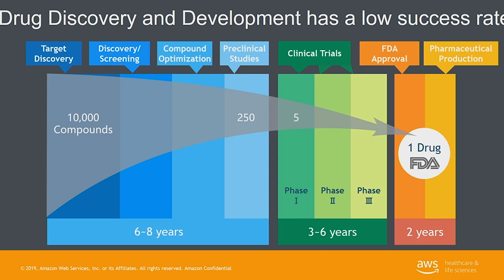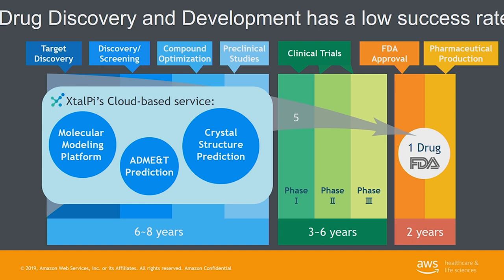We at Extalpi, and actually most computational chemists for the last 30 years or even longer, have wanted to use computational chemistry to reduce risk in drug development. At Extalpi, we are building molecular modeling platforms, ADMET toxicity prediction platforms, and crystal structure prediction platforms on the cloud, which we're using to help reduce risk so that more candidates will actually be successful. Today I'm going to talk about crystal structure prediction, because that is this incredibly complex analysis that would not be possible without the cloud in the way we've done it.